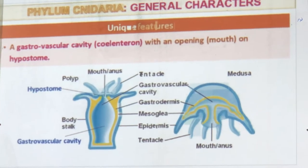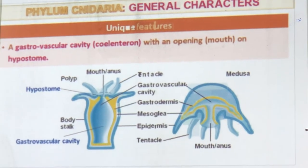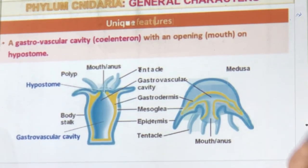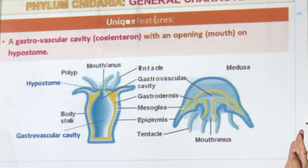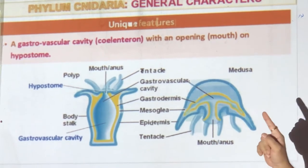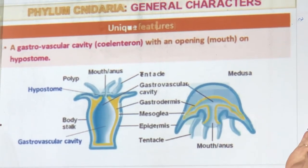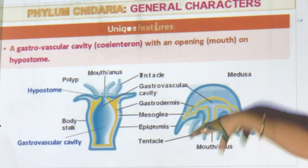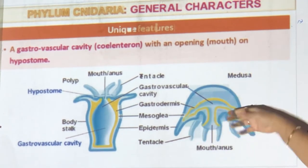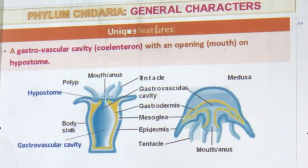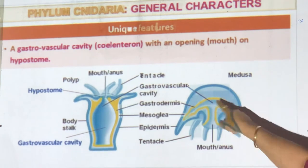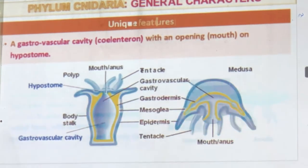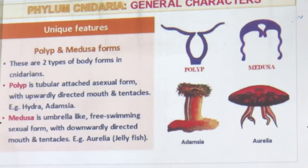Another unique feature is the gastrovascular cavity — a stomach-like cavity with only one opening called the mouth (hypostome) and no anus. In a jellyfish the mouth is downwards. You can see the cavity inside in the diagram.